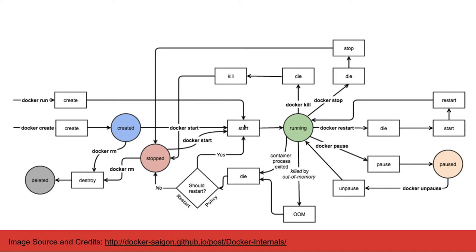When you do `docker create` with a Dockerfile and then `docker start`, you start the container. A running container can be stopped. If you want to restart, the container gets stopped and then starts again. The `docker rm` command removes the container from the list. You can create a container from an image directly with `docker run`, or from a Dockerfile by first creating the image.